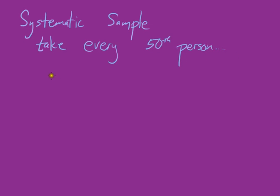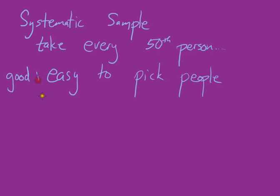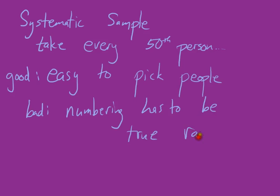The good thing about a systematic sample is that it's really easy to pick people. The bad thing about it is that if your numbering system isn't random, you could pick up a little bit of the pattern of the numbering system in your survey. The numbering has to be truly random in order for this to work. If it's not, then you're not going to get a group that really represents the population. Those are three of the most common ways to get samples that are representative of the whole population.